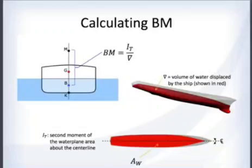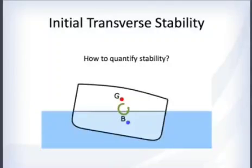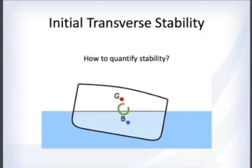The hydrostatics program gives you BM values for different drafts. What we're really trying to do is quantify stability — the block examples are good for concepts, but we need to put a number to this.